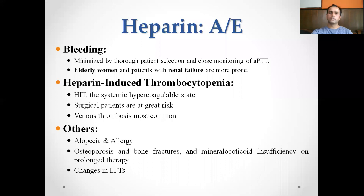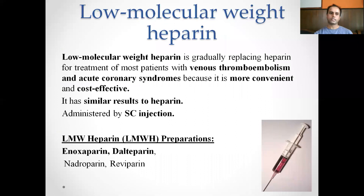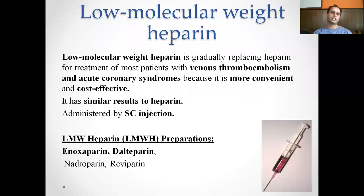Heparin is contraindicated in hypersensitive patients, those with bleeding disorders, alcoholics, and people who have had surgery of the brain, eye, or spinal cord. Low molecular weight heparin (LMWH) is gradually replacing heparin for most patients with venous thromboembolism and acute coronary syndromes because it is more convenient, cost-effective, and does not require constant patient monitoring. It has similar efficacy to heparin and can be administered by subcutaneous injection.